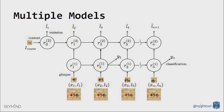One example is the deep recurrent attention model, which combines CNNs, RNNs, and feedforward nets. The authors who built it used it to read street numbers — that's an example of combining multiple neural nets together in a deep learning model and applying it to a real problem.